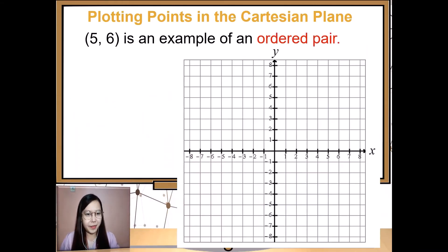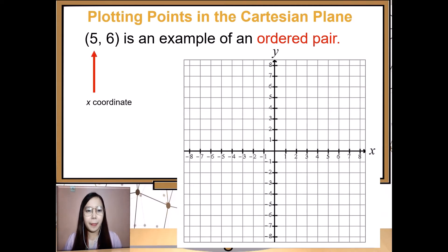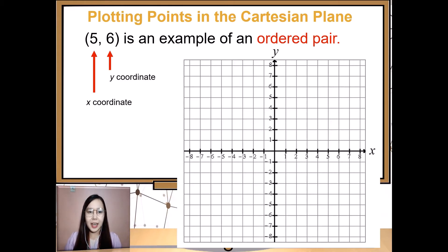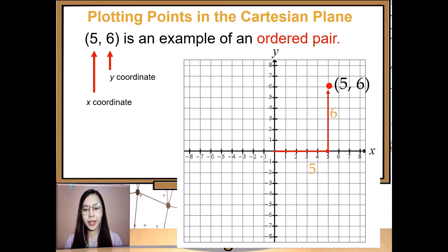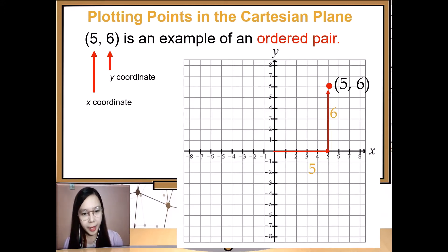Let's plot points on the Cartesian plane. The ordered pair (5, 6) is an example. Five is the x-coordinate and six is the y-coordinate. From the origin, count 1, 2, 3, 4, 5 to the right, then going upward 1, 2, 3, 4, 5, 6, to get the point (5, 6).